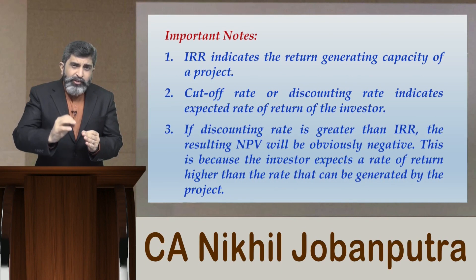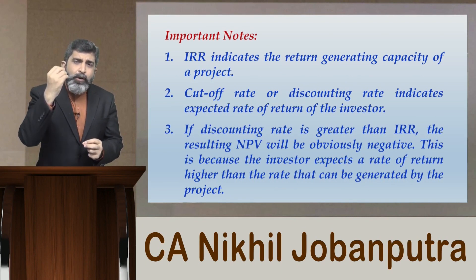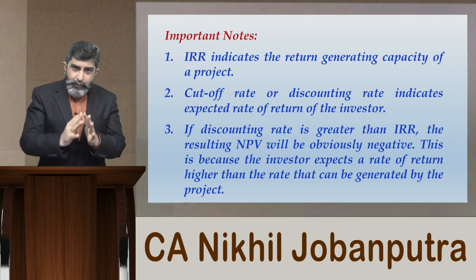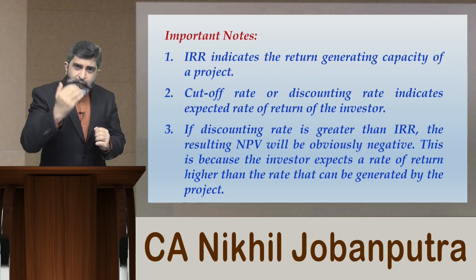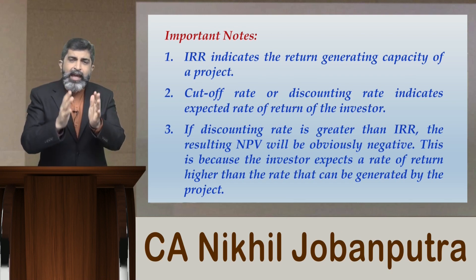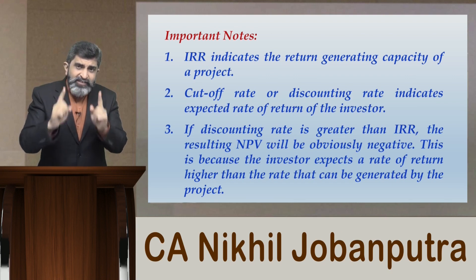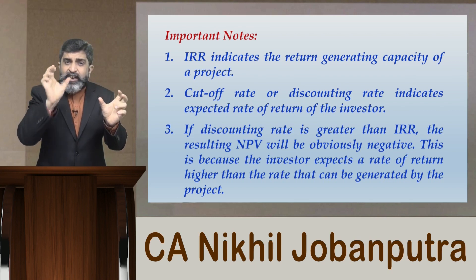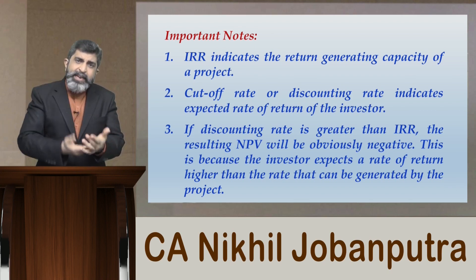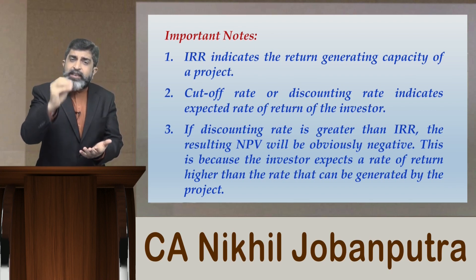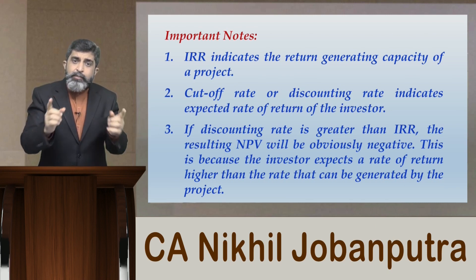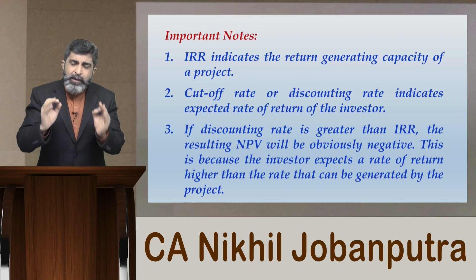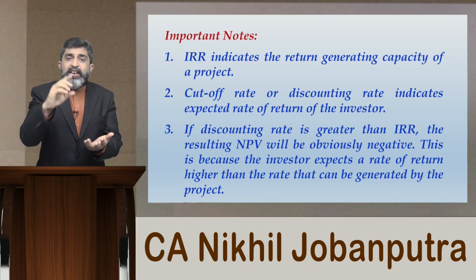For example, imagine a project has the capacity to generate a rate of return of 15% per annum and your expectation is 18% per annum. The project is capable of providing 15% but you are expecting more than that — as a result the NPV will be negative. There will always be a comparison between the discounting rate and IRR. When the discounting rate is greater than IRR, the resulting NPV will be negative, and that is when you should not accept such a project — it indicates a loss.